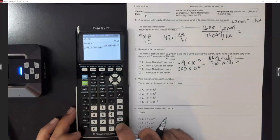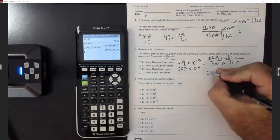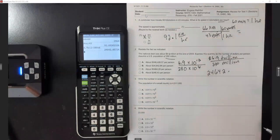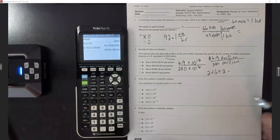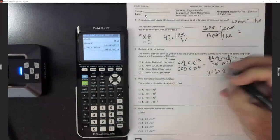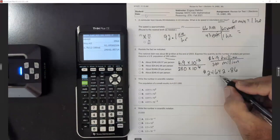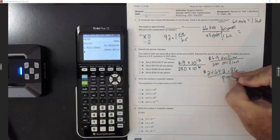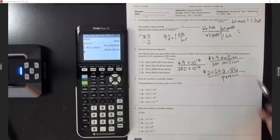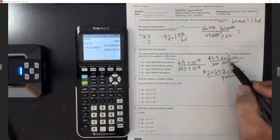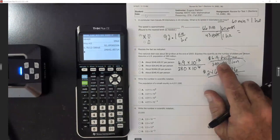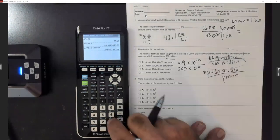We hit enter and the calculator gives us 24,642 — rounding to the nearest cents, .85 rounds up to .86 — so we get $24,642.86 per person. You take the total debt, divide by the total number of people, and get that answer. You could also have written 6.9 trillion out as the full number and divided by 280 million.